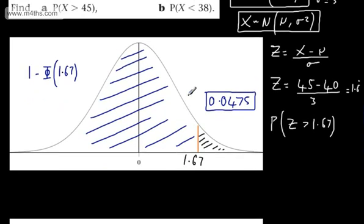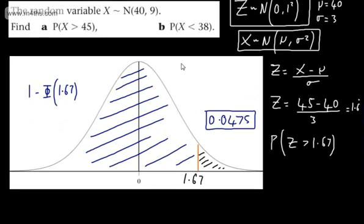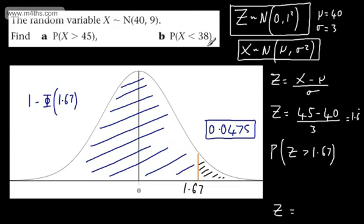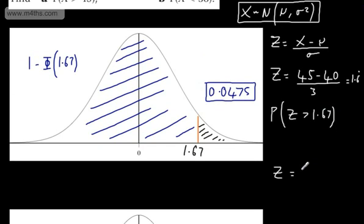OK, let's look at the next one. We've got now the probability that x is less than 38. So let's make the substitution. We will now say z, and what we're going to have then is the following. We will have 38 minus 40 over 3. So 38 minus 40 divided by 3.